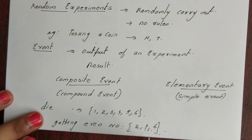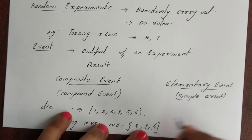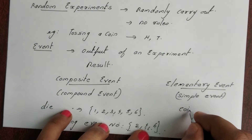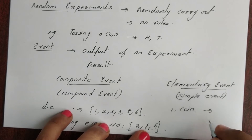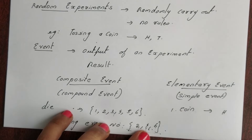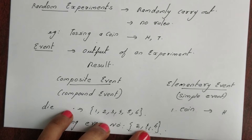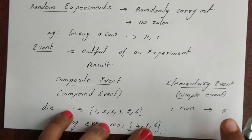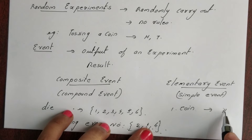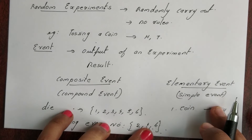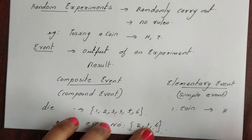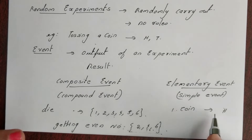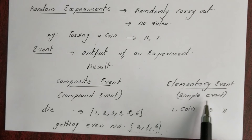Then elementary events — this is a simple event. When we toss a coin, the probability of getting a head is one single outcome. So an elementary event means a simple event — it cannot be split further.